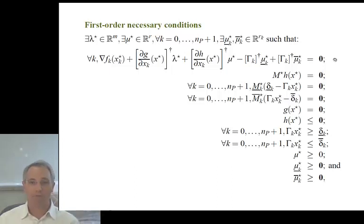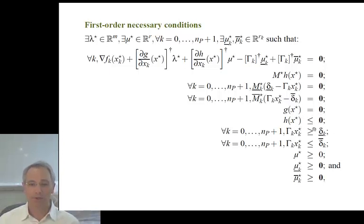Starting with a minimizer X* of the economic dispatch problem that is a regular point of the constraints, we can find Lagrange multipliers lambda* and mu* on the system equality and inequality constraints, and mu_underline_K* and mu_overline_K* on the generator constraints that verify the first order necessary conditions. Capital mu is a matrix whose diagonal entries are the corresponding entries of the vector lowercase mu.